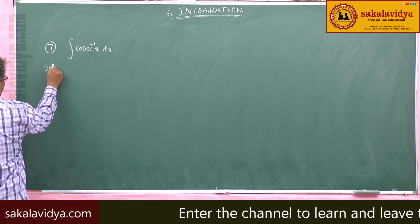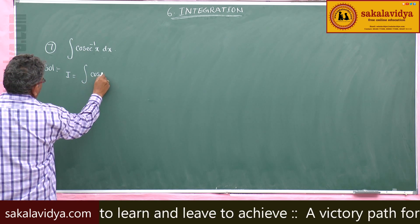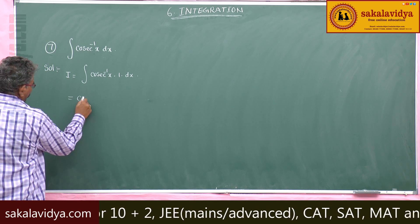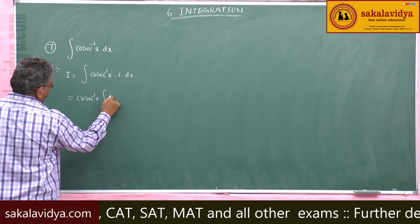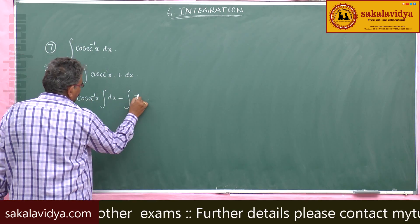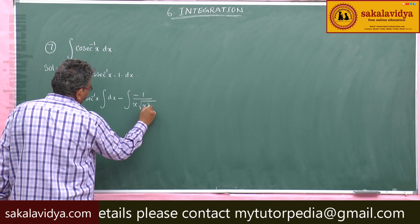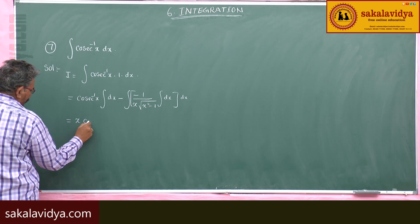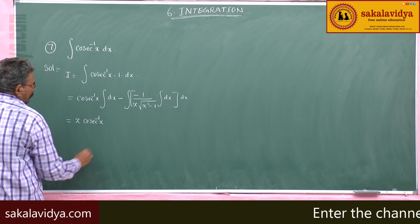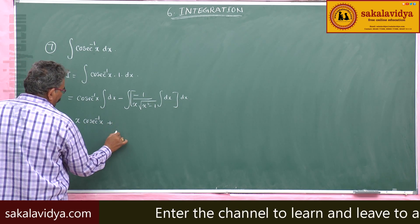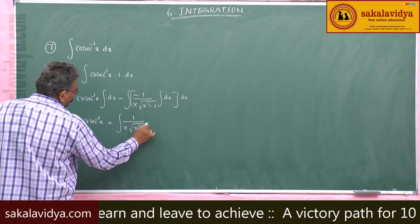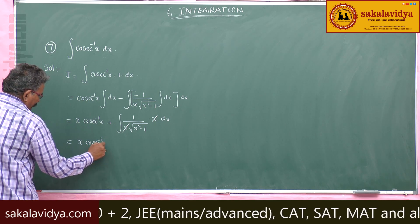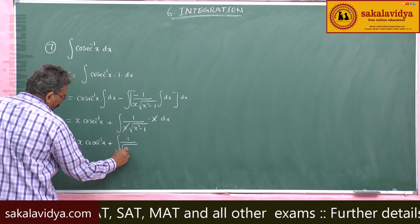I equals to integral of cosecant inverse x into 1 dx. Cosecant inverse x is the first function. Integral of second function dx, minus derivative of cosecant inverse x which is minus 1 by x under root of x square minus 1, integral dx, and whole dx. This gives x cosecant inverse x, minus of minus gives plus, integral 1 by x under root of x square minus 1 into x dx. The x and x get cancelled.